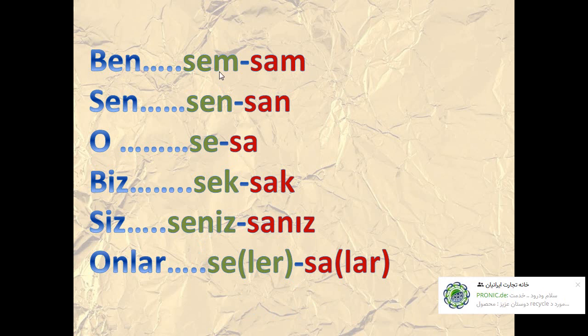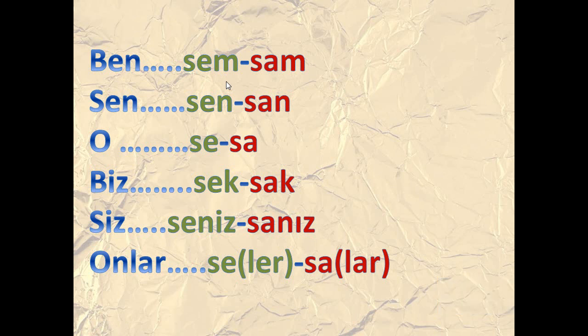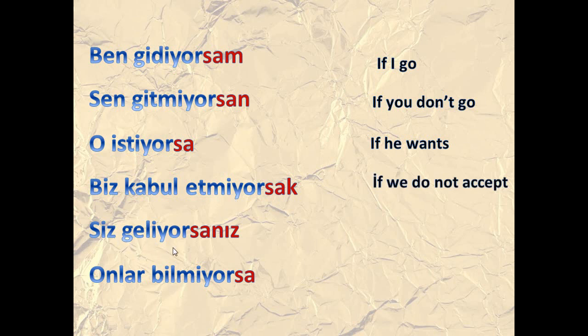Here I will show you the combined form. We have thin sounds and thick vowels. Ben gidiyorsam means 'if I go.' Sen gitmiyorsan means 'if you don't go.' O istiyorsa means 'if he wants.' Biz kabul etmiyorsak means 'if we do not accept.' Siz geliyorsanız means 'if you come.' Onlar bilmiyorsa means 'if they don't know.'